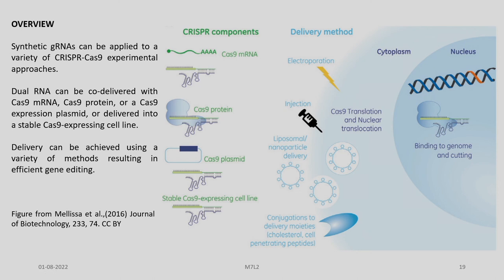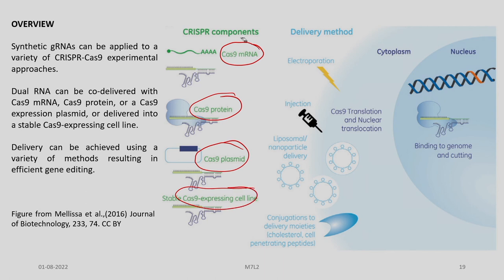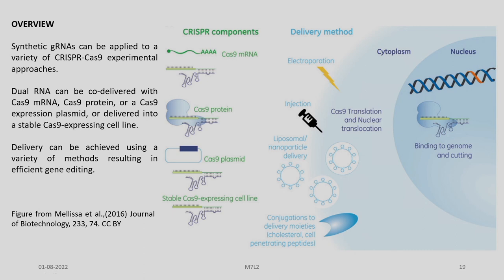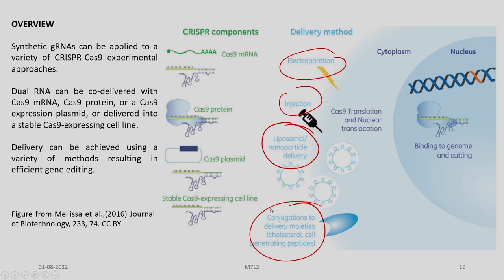Synthetic guide RNAs can be applied to a variety of CRISPR-Cas9 experimental approaches. Dual RNA can be co-delivered with Cas9 mRNA, Cas9 protein, or Cas9 expression plasmid, or delivered into a stable Cas9-expressing cell. Delivery can be achieved using a variety of methods like electroporation, injection, liposomal nanoparticle delivery, and conjugations to delivery moieties.